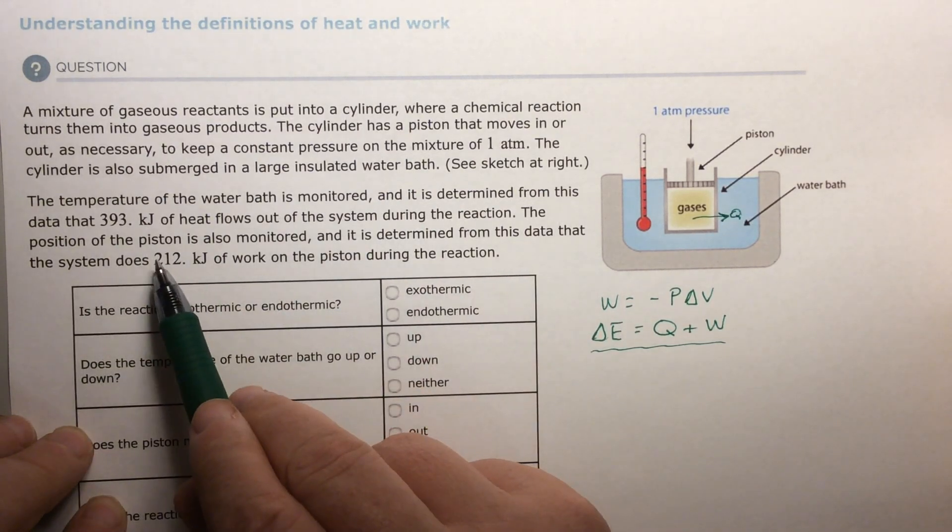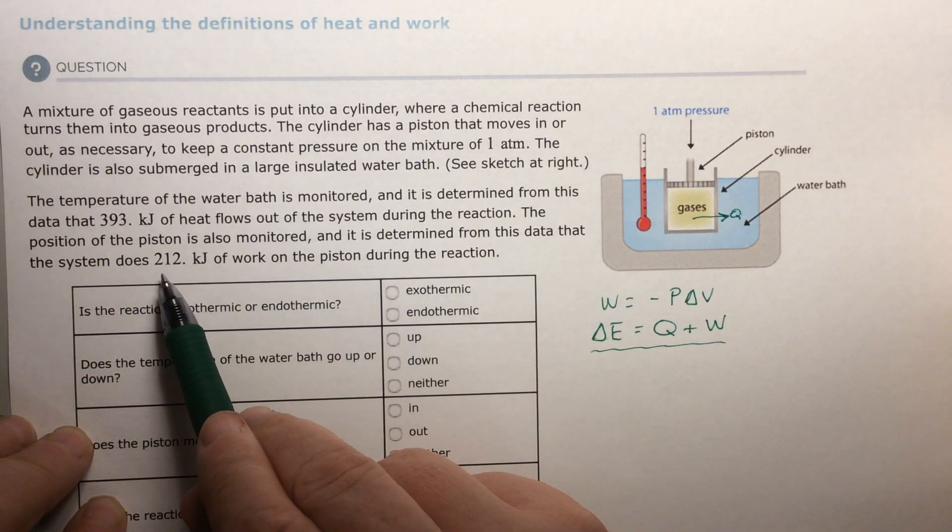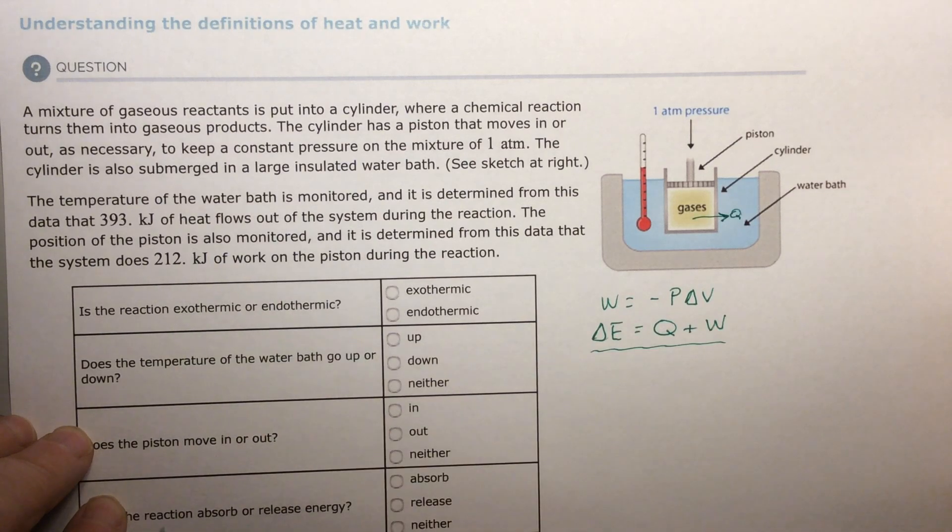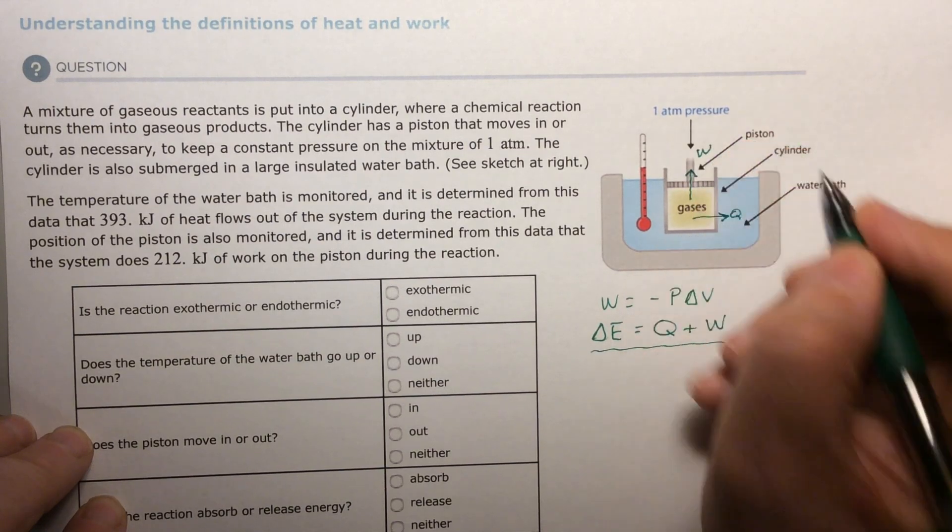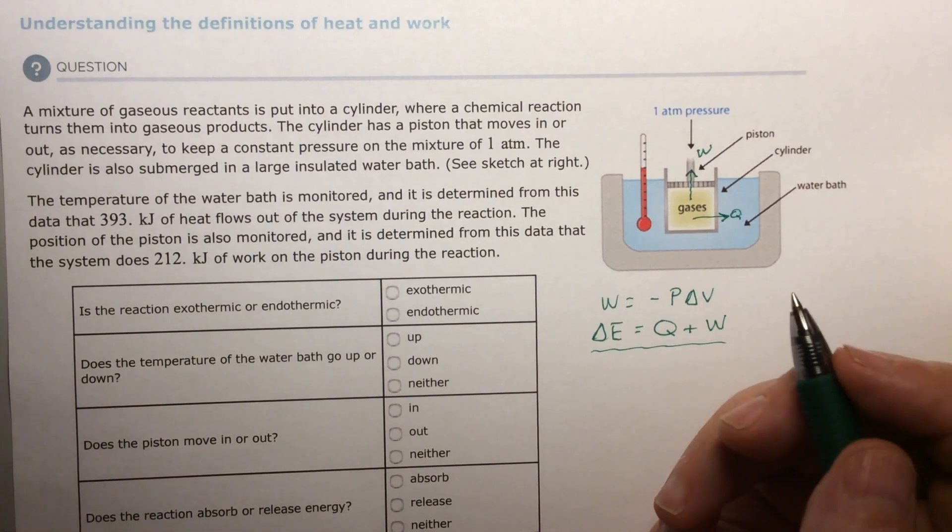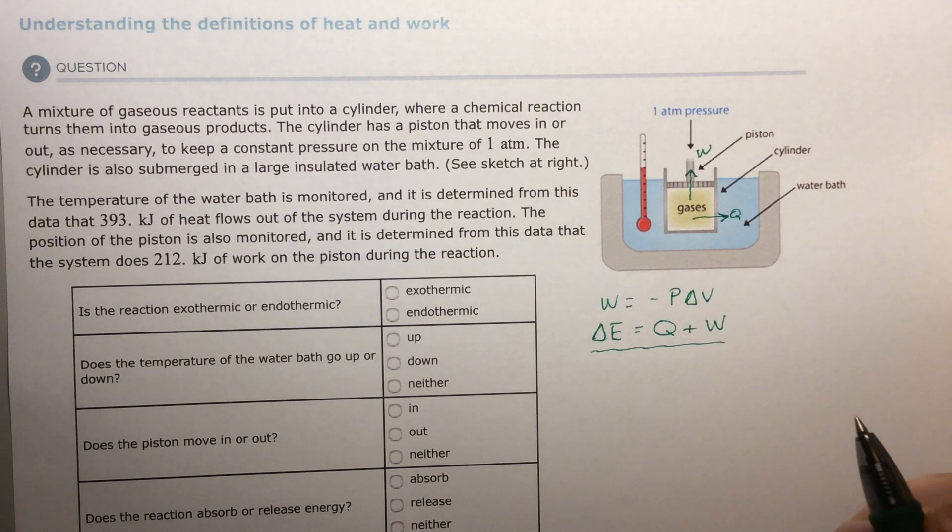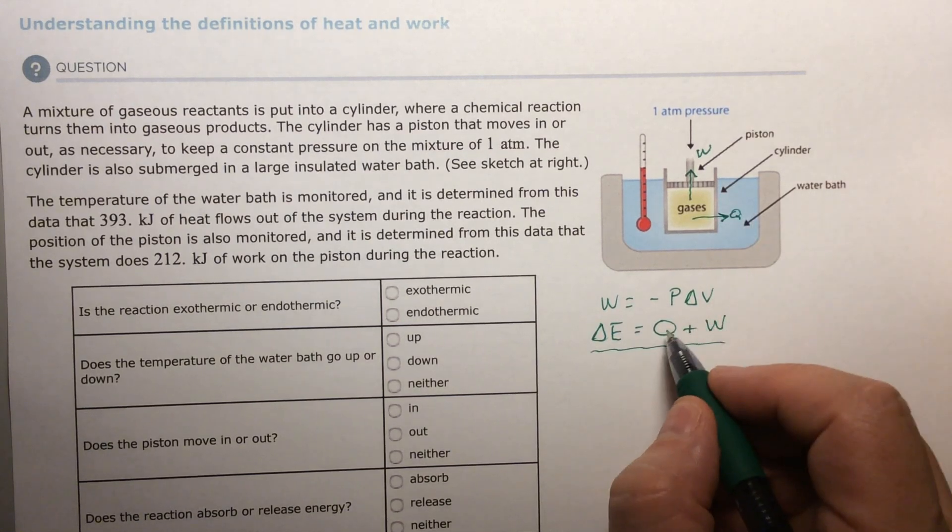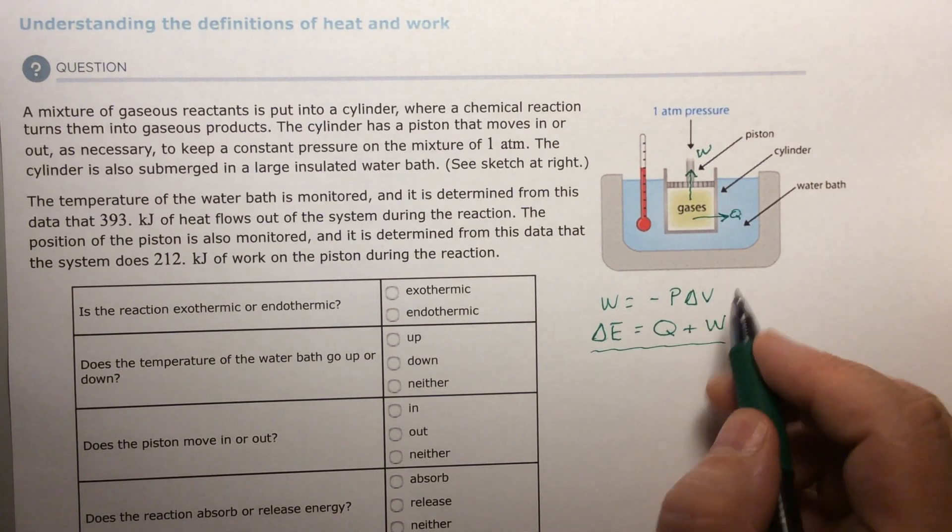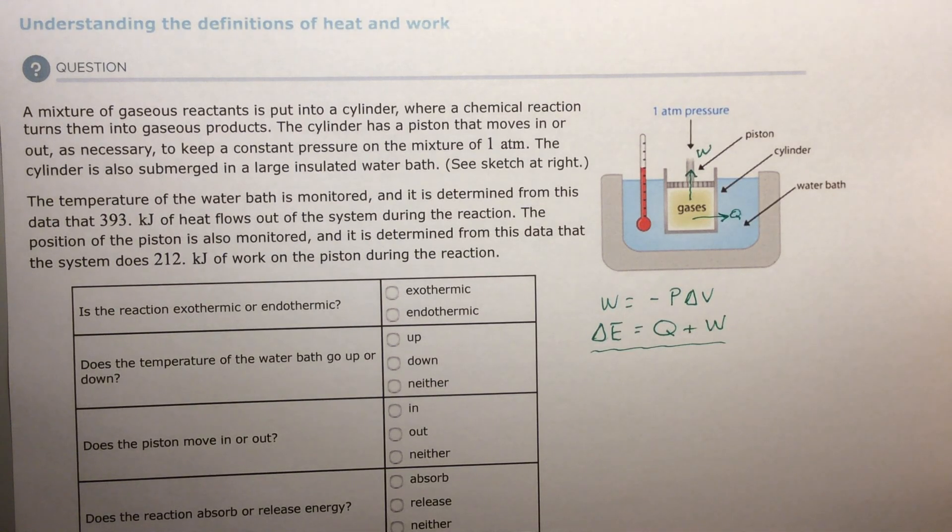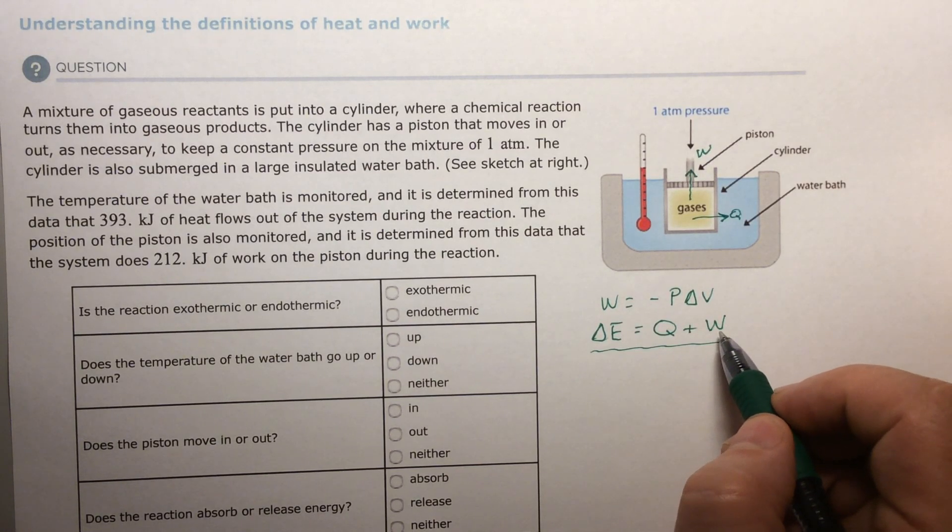The position of the piston is also monitored and it's determined from this data that the system does 212 kilojoules of work on the piston during the reaction. The piston is working and it's doing work on the piston, so it's losing energy in work. It's losing energy in Q or in heat. That means that since I'm losing heat, it's going to be a negative Q and I'm losing work. I'm doing work on the piston, so I'm losing energy in work as well. You're going to have a negative Q and a negative work in this example.